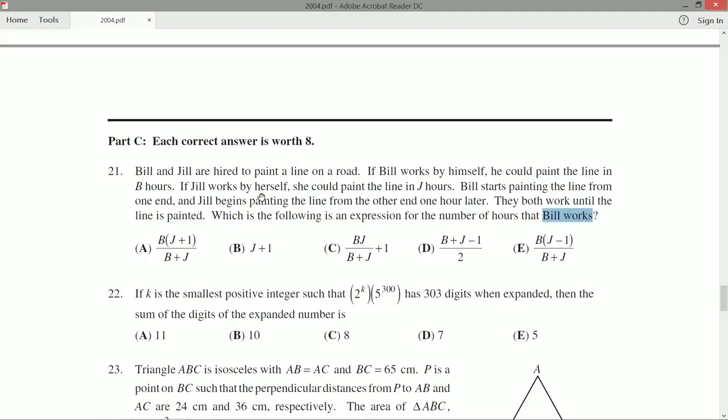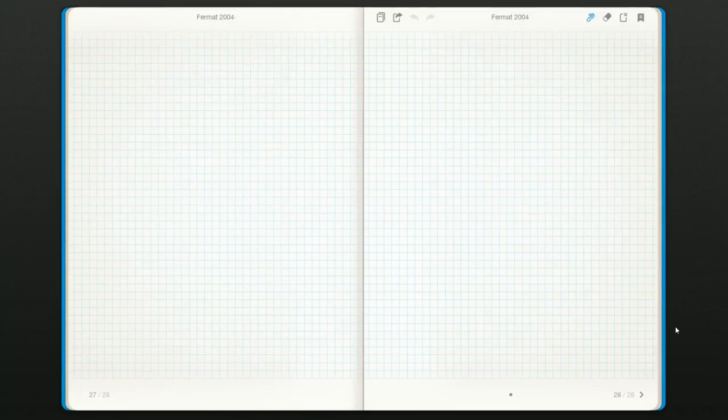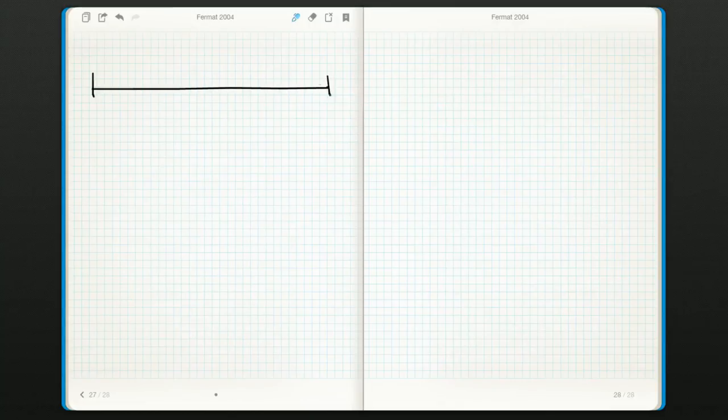Bill starts an hour before Jill. Interesting. We don't know how long this road is, but it doesn't really matter, I don't think. To maybe simplify and visualize these things, I'm going to get a separate piece of paper, and I'm going to give a length to the line. It doesn't really matter what it is, because you could just say it's one length, but I'm just going to say it's L, distance L.